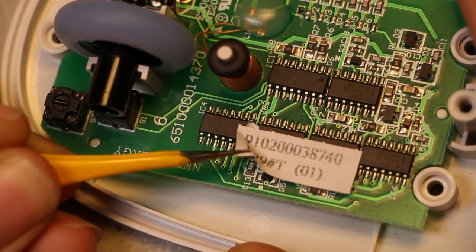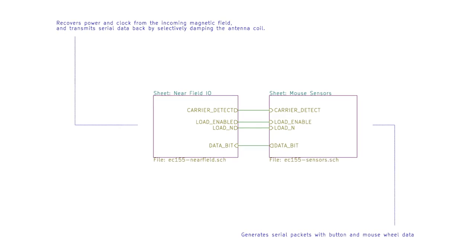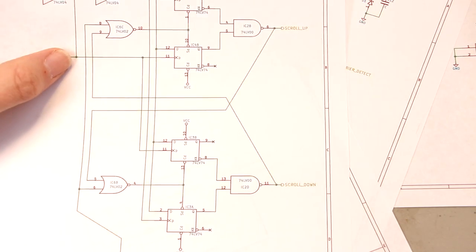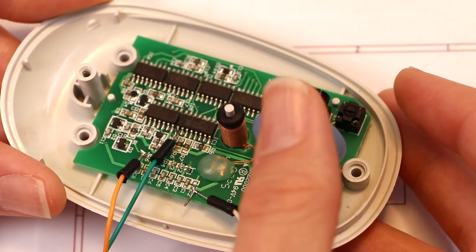So this little Wacom mouse seemed like a really nice target for reverse engineering. The most complicated part of the circuit is actually just for converting the mouse wheel sensor's outputs into bits for scrolling up and down.